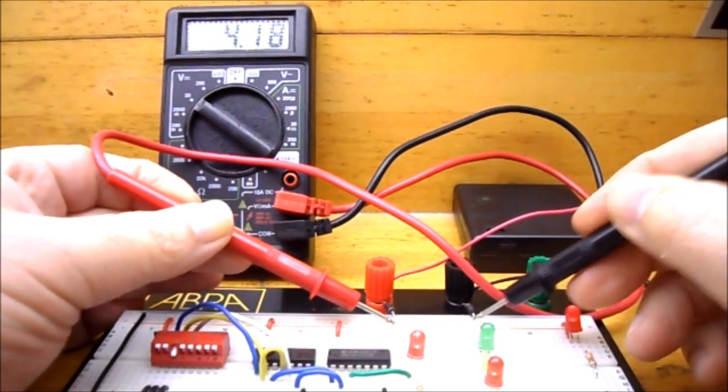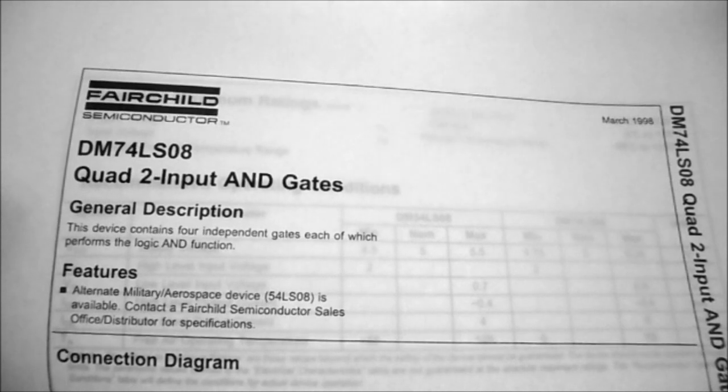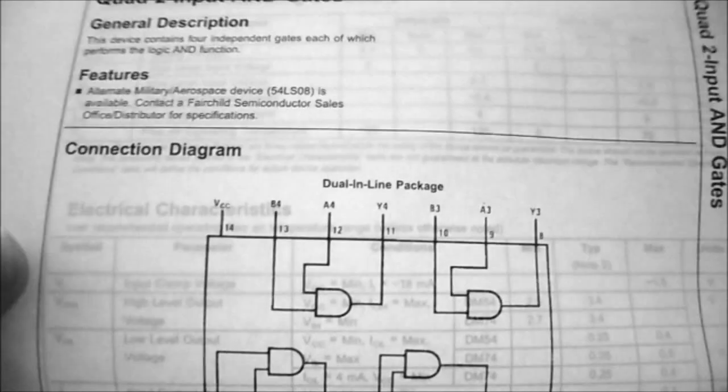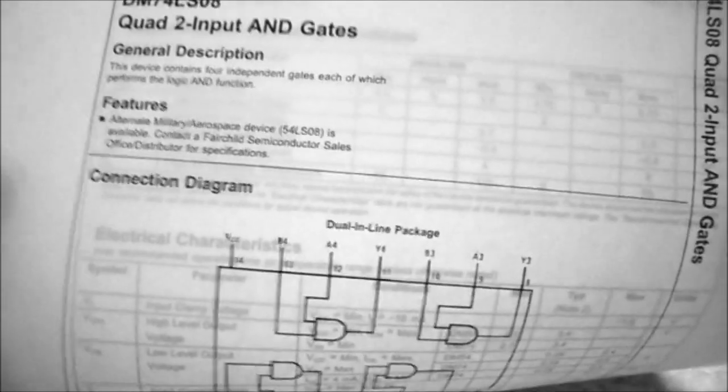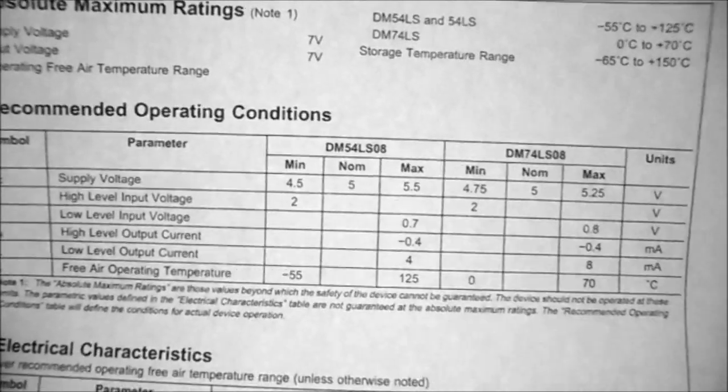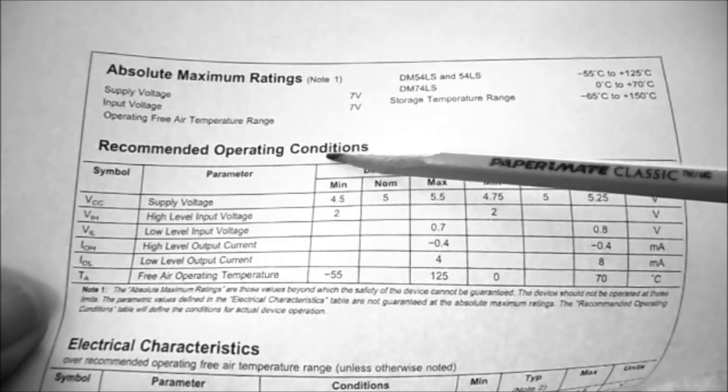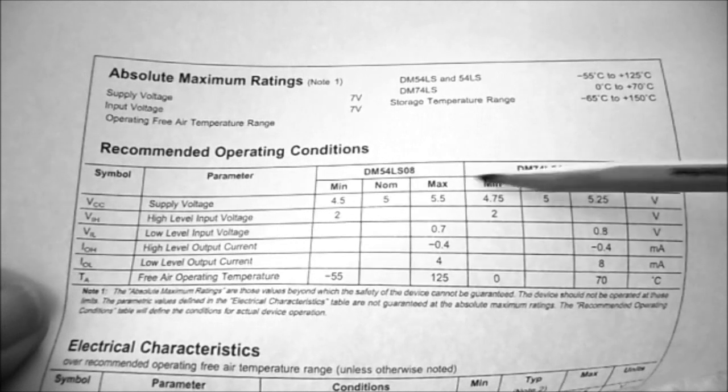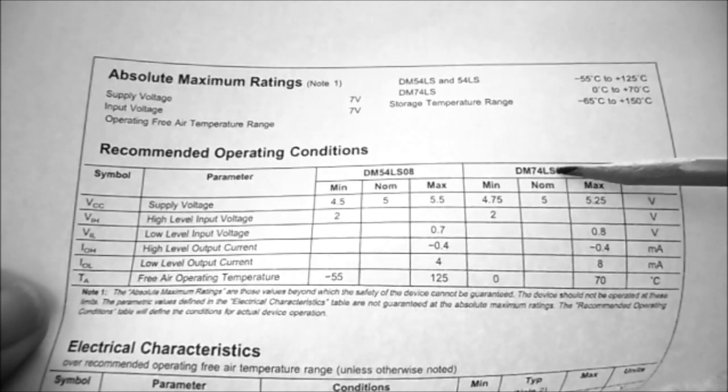I have here a data sheet for the 74LS08. This one was manufactured by Fairchild. You can see they give you the pinouts for it. But on the second page, they give you electrical characteristics for the IC. So these are the recommended operating conditions. And you can see we've got absolute maximum ratings here. We've got two columns. Basically this is for the 5408 and this is for the 7408. So we're using the 7408.